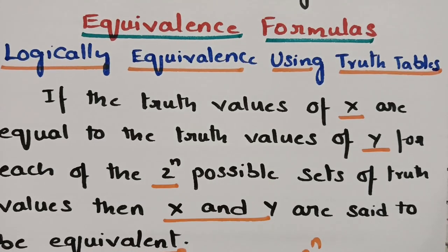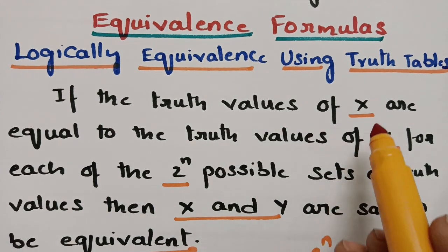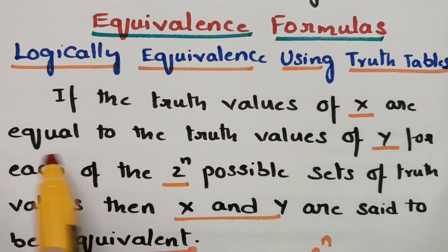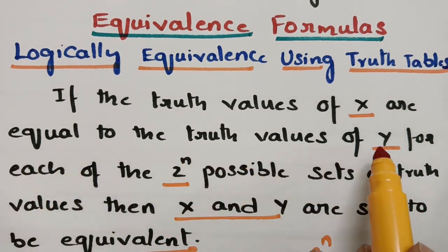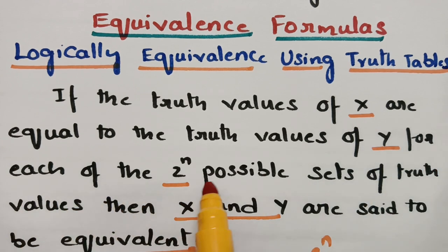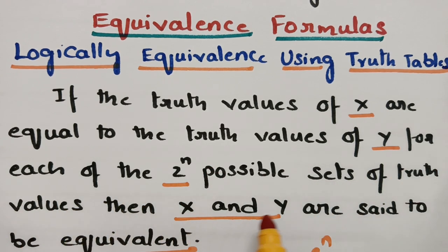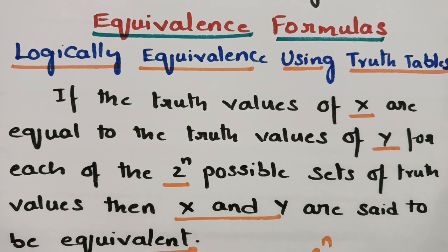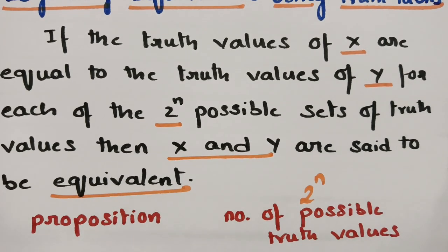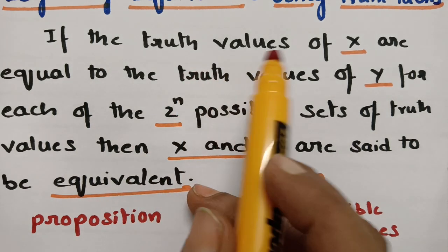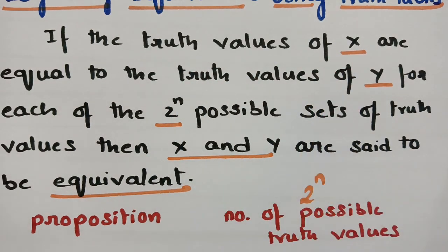According to our definition, if the truth values of x are equal to the truth values of y for each of the 2^n possible sets of truth values, then x and y are said to be equivalent. So if you compare the last column of each truth table for x and y and they are equal, then we say that x and y are logically equivalent.